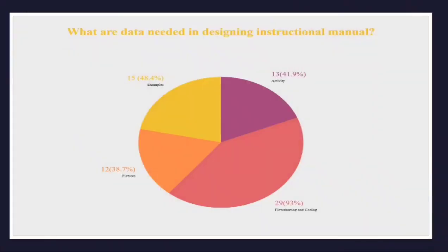Statement of the Problem No. 1: What are the data needed in designing an instructional manual? Based on the results gathered from respondents, out of 31, 29 respondents or 93% agreed that the manual should help with flowcharting and coding. 15 respondents or 48.4% need examples in the manual. 13 respondents or 41.9% want activities. And lastly, 12 respondents or 38.7% look for pictures. We therefore conclude that the manual on C++ should help with flowcharting and coding.